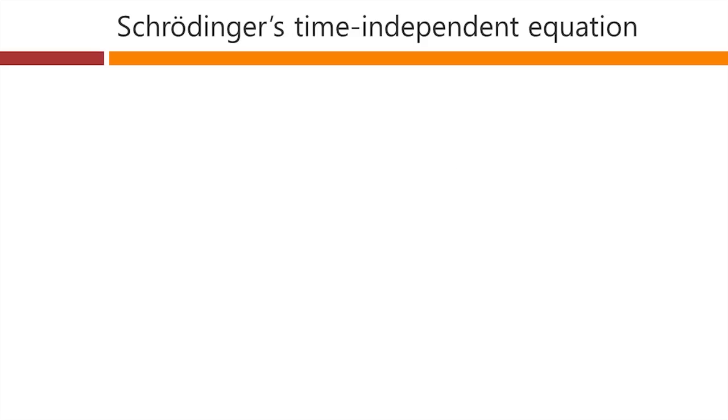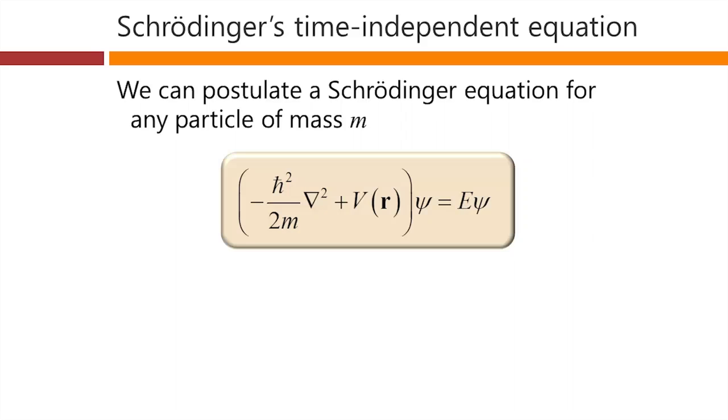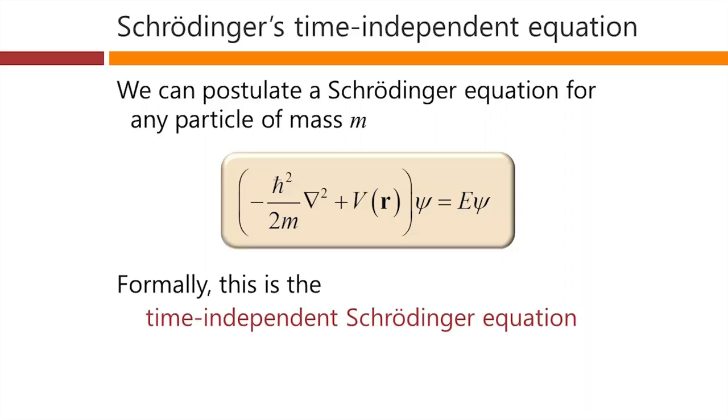This is technically what's called the time-independent equation. And we can go on if we want. We did this, presuming we were working with an electron just for definiteness. But we can postulate that we could have a Schrödinger equation for any particle of mass m. So we'd have, instead of m0 here, we'd have just the mass of the particle. And this would be our time-independent Schrödinger equation for that particle. As I said, formally, this is the time-independent Schrödinger equation. We'll look at the time-dependent Schrödinger equation later on.